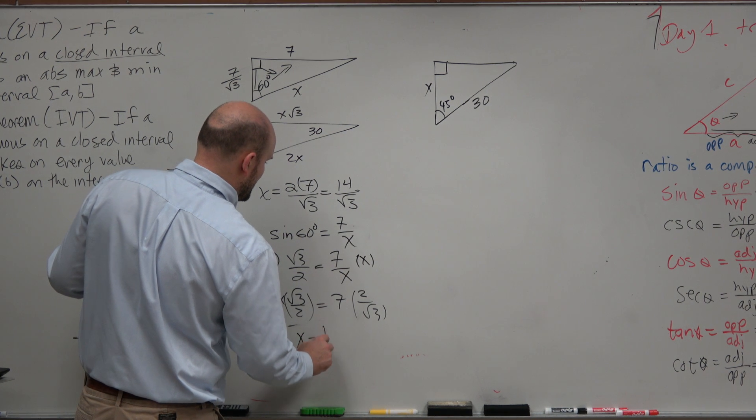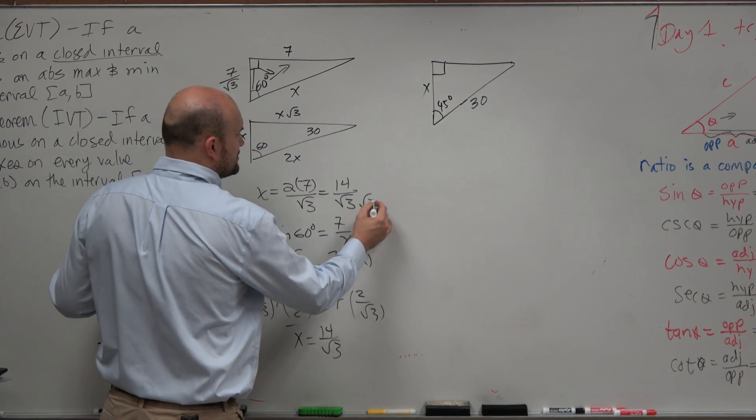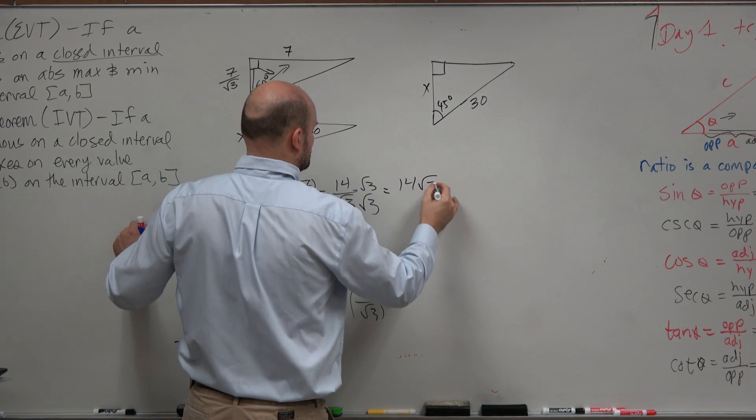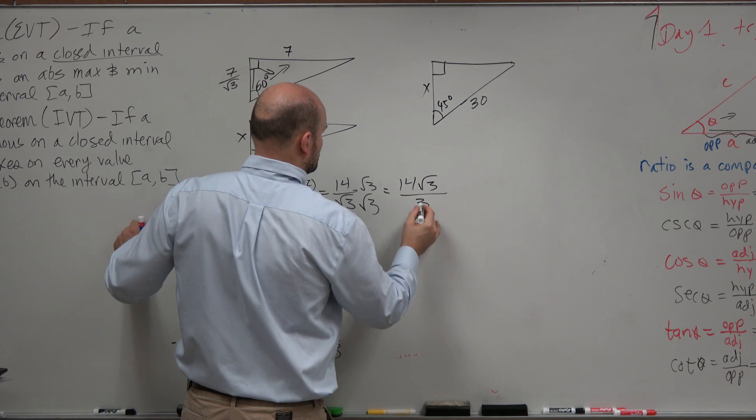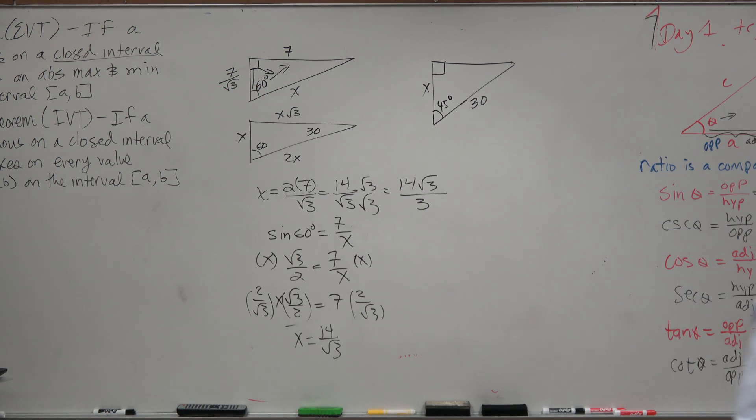And lo and behold, what do we know? We get 14 over the square root of 3, which again, you could also rationalize your denominator, which I did not do, which would be your final answer there. OK? Now, that is important because if you guys don't have a